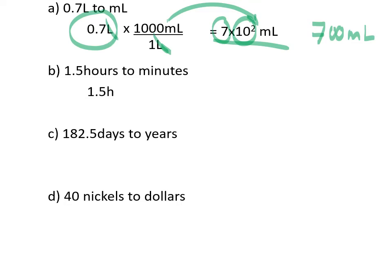1.5 hours into minutes. So our given value is 1.5. We set up our conversion factor with hours on the bottom. The thing we want on top and we do the calculation we end up with our 90 minutes.